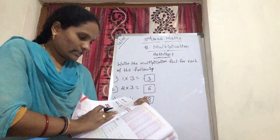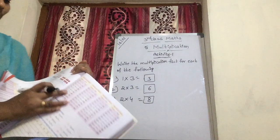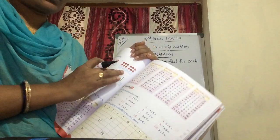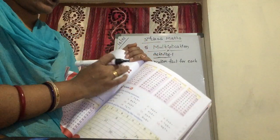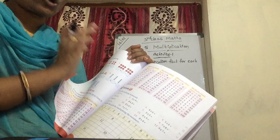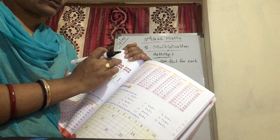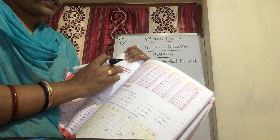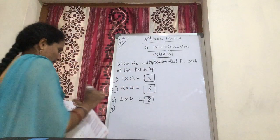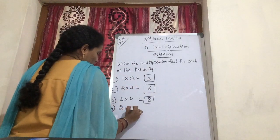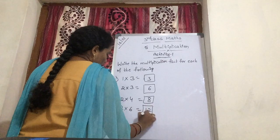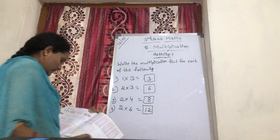Now, next. Here, some apples are there. Here also, 2 groups. Each group having how many apples? 1, 2, 3, 4, 5, 6 — each group having 6 apples. So, 2 groups, 6 apples each. 2 sixes are 12. Total is 12. Okay.